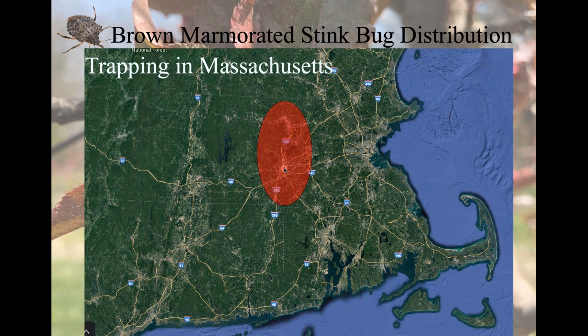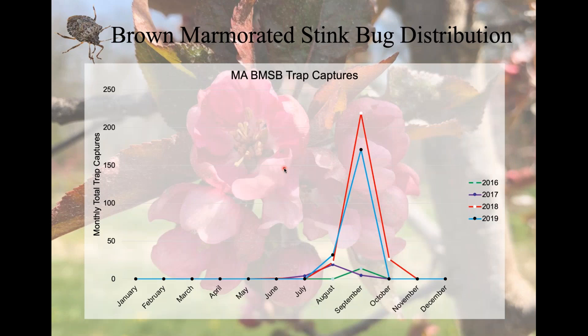We have orchards and farms we've been trapping at in this area, and this is where we saw our first catches exceeding threshold. In 2016 and 2017 we were seeing some small numbers, but nothing really concerning in terms of agricultural damage. 2018 was the first year our traps exceeded threshold — the only crop we currently have a threshold for is apples, and the threshold is 10 per trap per week. When we exceeded that threshold, we deployed a new trap, which is why you see a really big spike in our numbers. That new trap is very good at catching these stink bugs, and we also had those traps up in 2019.